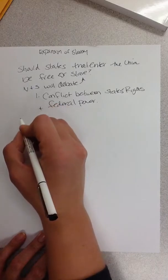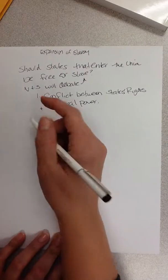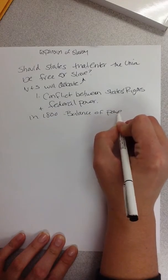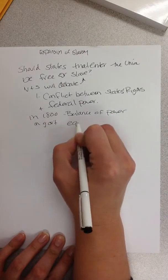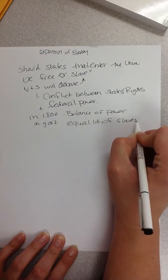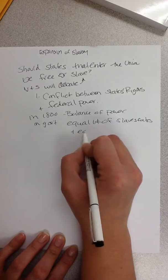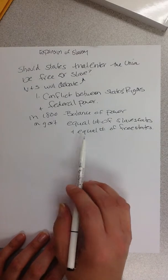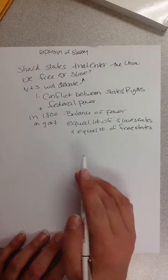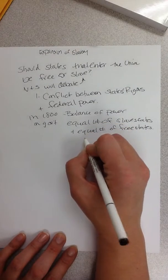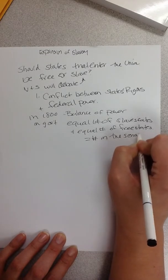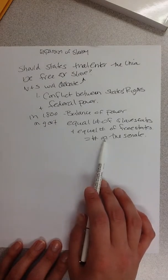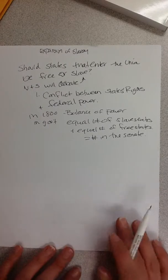Right now in government in the 1800s, there is a balance of power. There is an equal number of slave states and an equal number of free states. This balance is going to be very tricky to keep. There's an equal number of slave states and free states, which means there is an equal number in the Senate. For each side not to gain more power than the other, this needs to stay equal — and it won't.